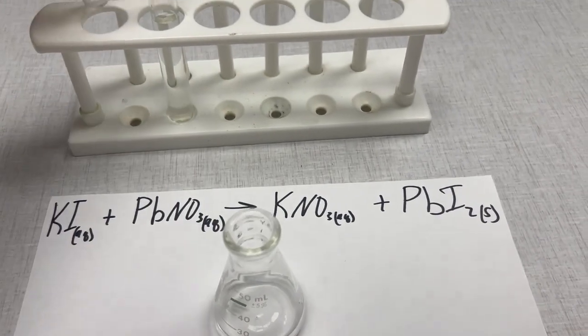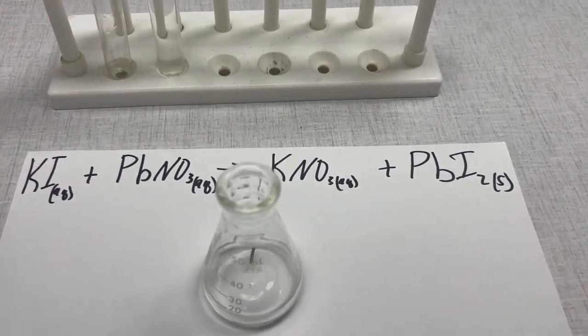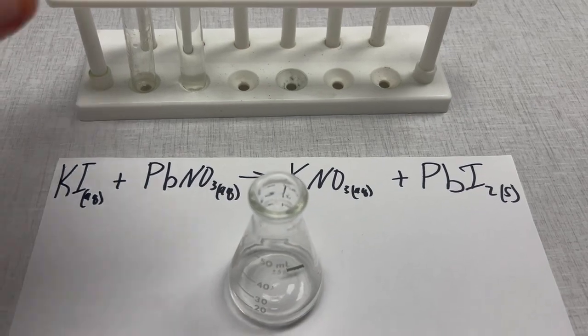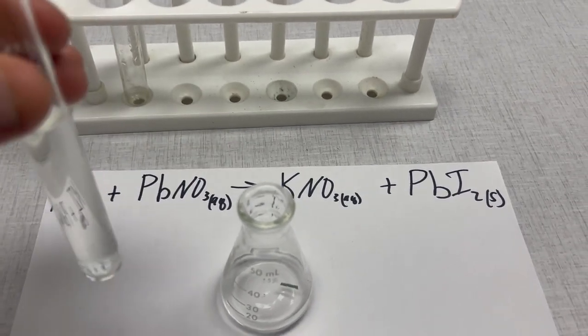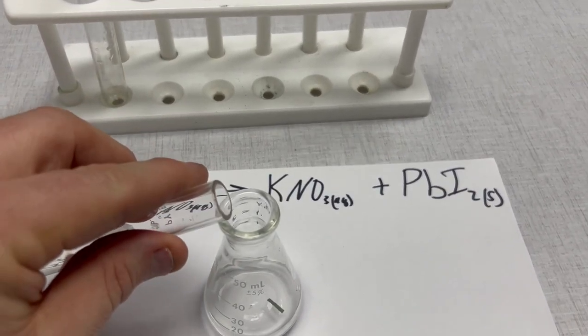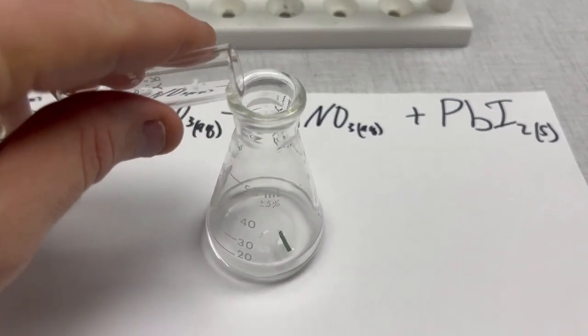You can ignore the green little floating thing there, that's actually a thing off of my chemistry set that somehow got in there. And then now we're going to add the lead nitrate and we'll see what happens inside of here.